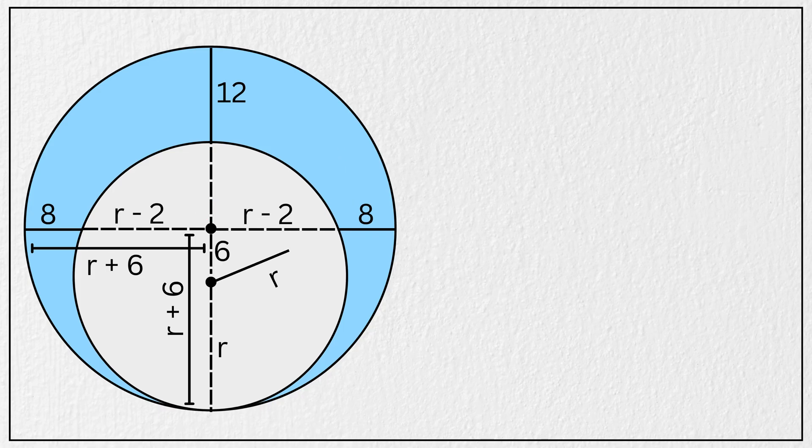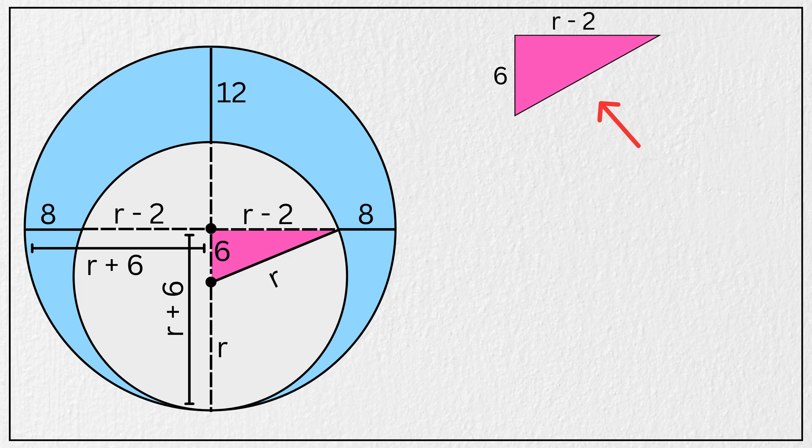Now let's draw a radius from the center of the smaller circle, forming a right-angled triangle like this. One leg of this right triangle is 6 units, the other leg is r minus 2 units, and the hypotenuse is the radius of the smaller circle, which is r units.